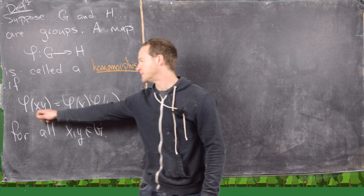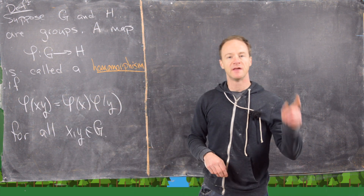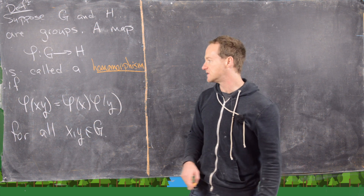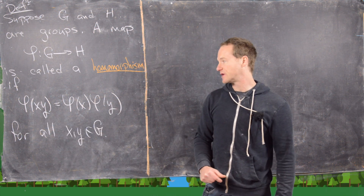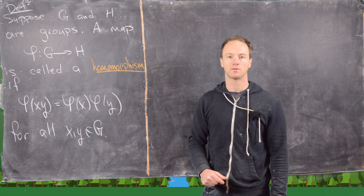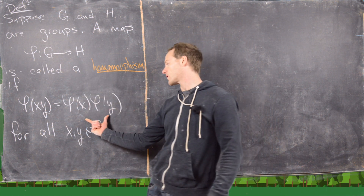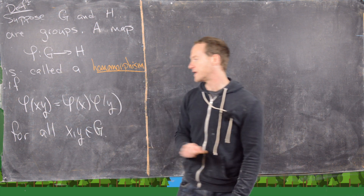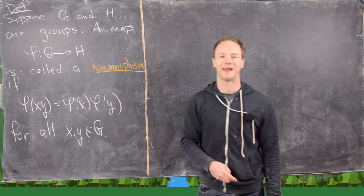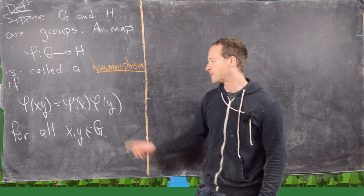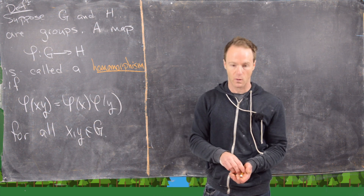In other words, phi of xy equals phi of x times phi of y. The important thing to notice is that the operation between x and y is given by the group G, whereas the operation between phi of x and phi of y is given by the group operation on H. This has to hold for all x and y in G.